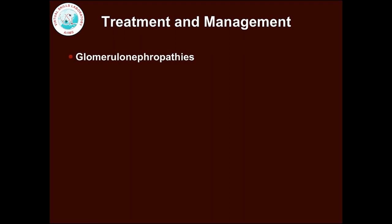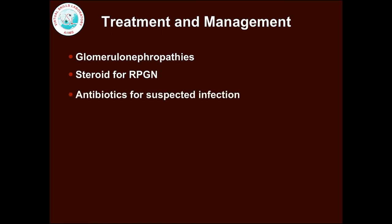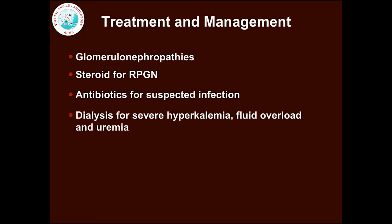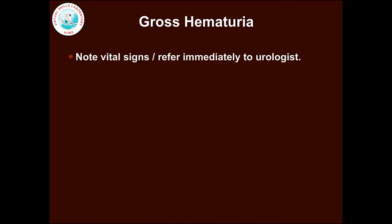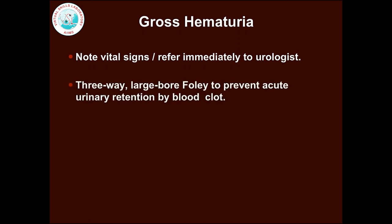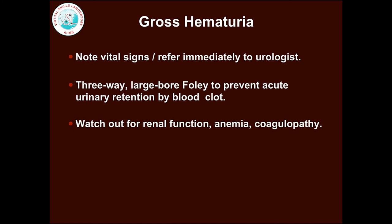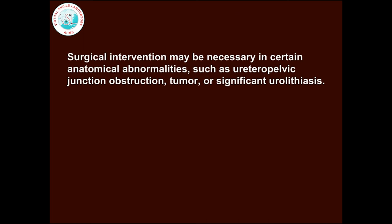Treat for specific glomerulonephropathies. Steroids can be given for rapidly progressive glomerulonephritis. Antibiotics for suspected infection. Dialysis can be undertaken for severe hyperkalemia, fluid overload, and uremia. If there is gross hematuria, note vital signs and refer immediately to urology. A 3-way large-bore Foley's catheter can be inserted to prevent acute urinary retention by blood clot. Watch out for renal function, anemia, and coagulopathy. Surgical intervention may be necessary for anatomical abnormalities such as ureteropelvic junction obstruction, tumor, or significant urolithiasis.